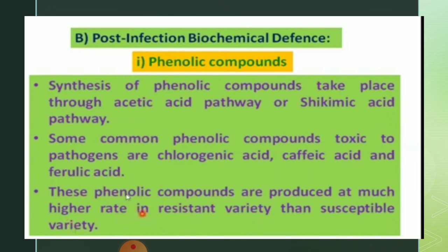Now, post-infection biochemical defense. The main inhibitory substances synthesized by plant cells or tissues in response to infection or injury are phenolic compounds. Their synthesis takes place through the acetic acid pathway or shikimic acid pathway. Some phenolic compounds pre-exist in healthy plants but their synthesis or accumulation is accelerated when the plant gets infected by a pathogen.